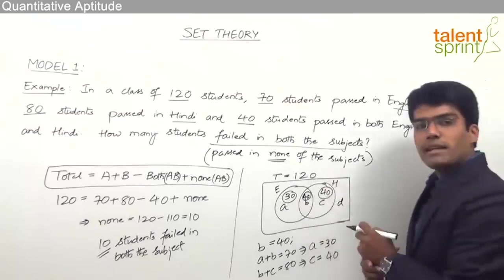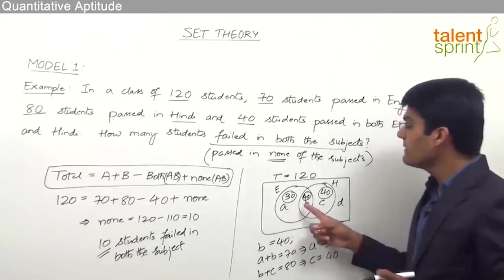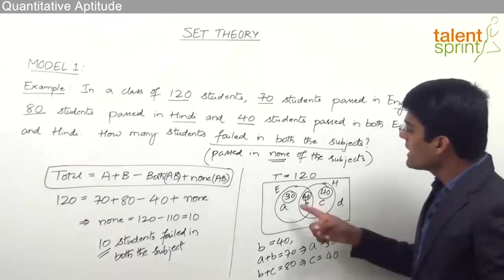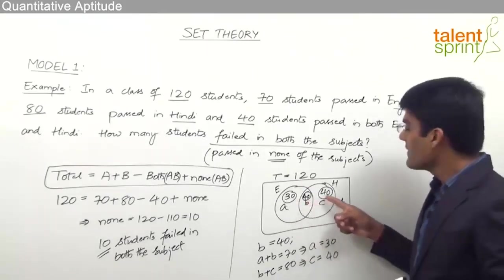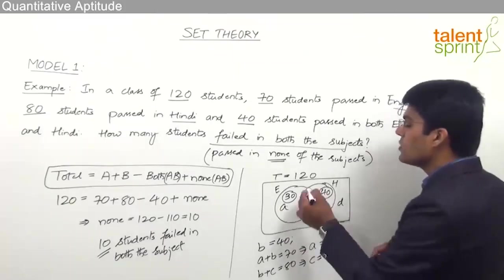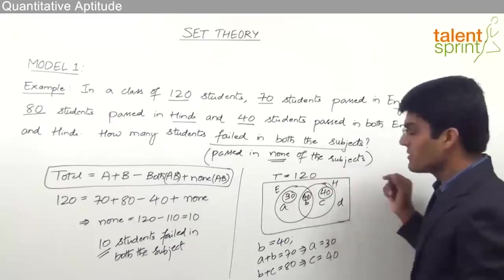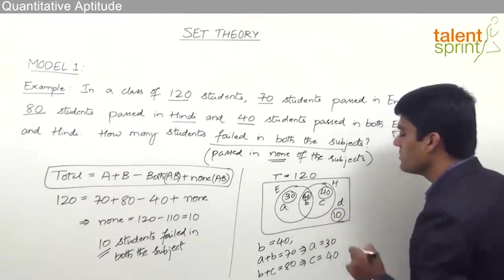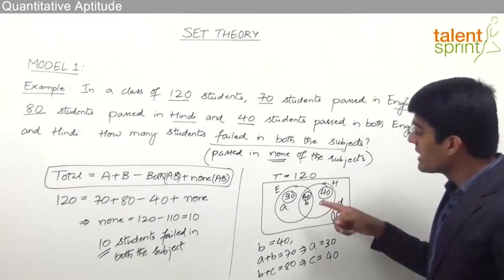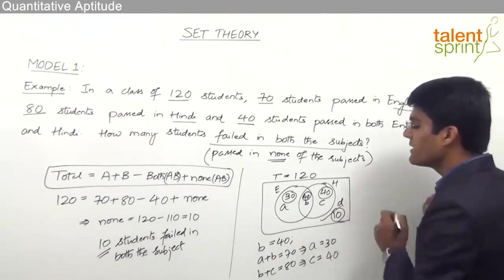The total is 120 and three regions have already been filled: 30, 40, and 40. So, 30 plus 40 is 70, and 70 plus 40 is 110. Since the total is 120, the remaining value for D is 120 minus 110, which equals 10. The number of students who failed in both subjects is 10.